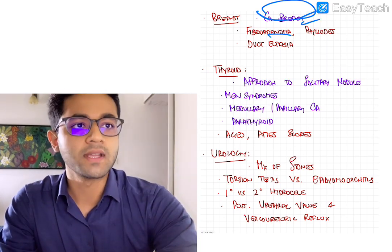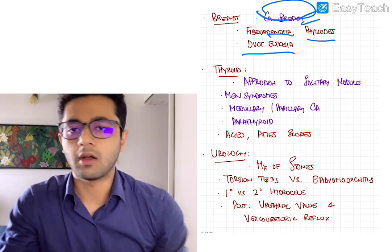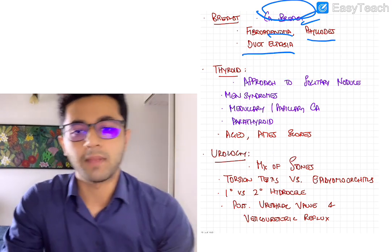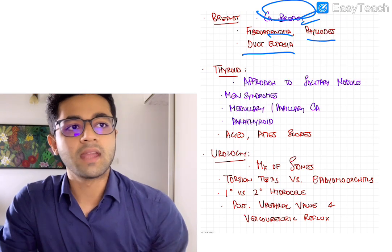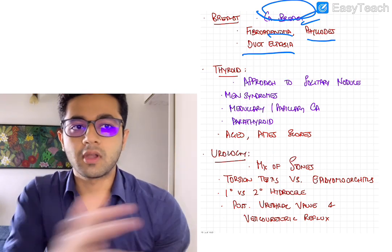Mildly important topics include fibroadenoma, phyllodes tumor and duct ectasia. Also, sometimes the difference between eczema and Paget's disease comes in. But yeah,